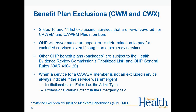Other OHP benefit plans are subject to the Health Evidence Review Commission's prioritized list, with the exception of qualified Medicare beneficiaries, for whom we follow Medicare's rules. When a service for a CAWEM member is not an excluded service, you must always indicate if the service was emergent — on an institutional claim enter admit type 1 for emergency, and on a professional claim enter Y in the emergency field.